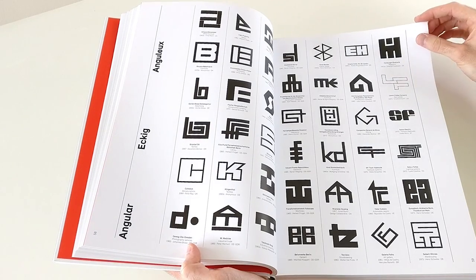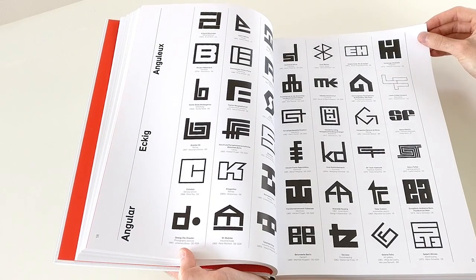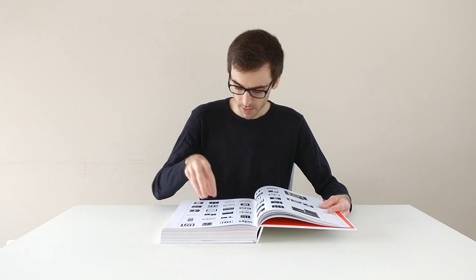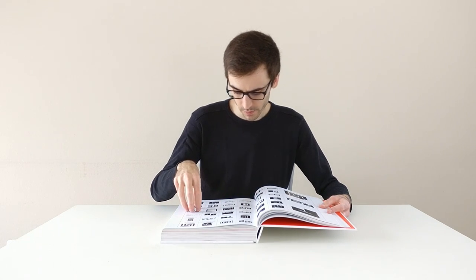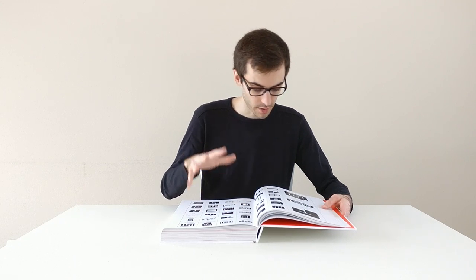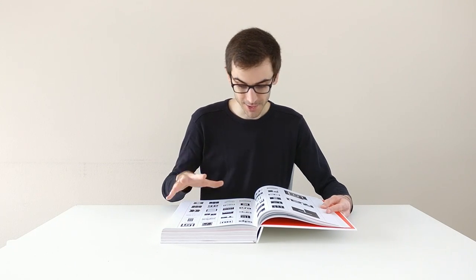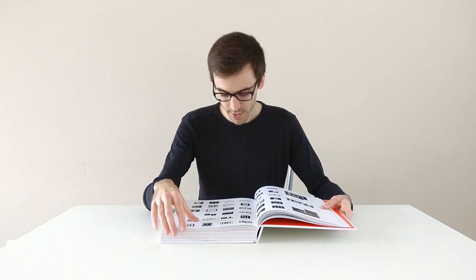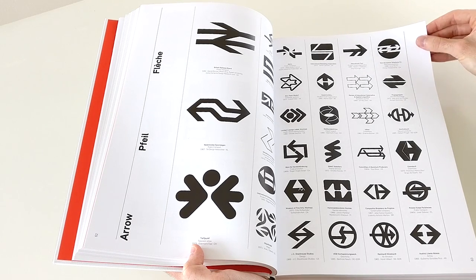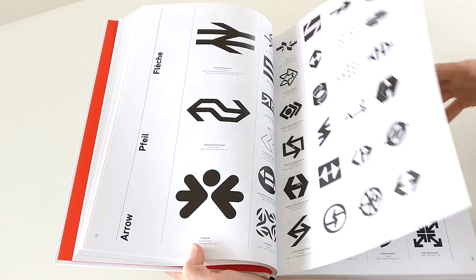As you can see, there are a lot of logos on one spread, but luckily this book is well designed and there is always enough white space around every logo, although there are still a lot of logos on every spread. Every logo has the information on the company and the logo designer beneath it.